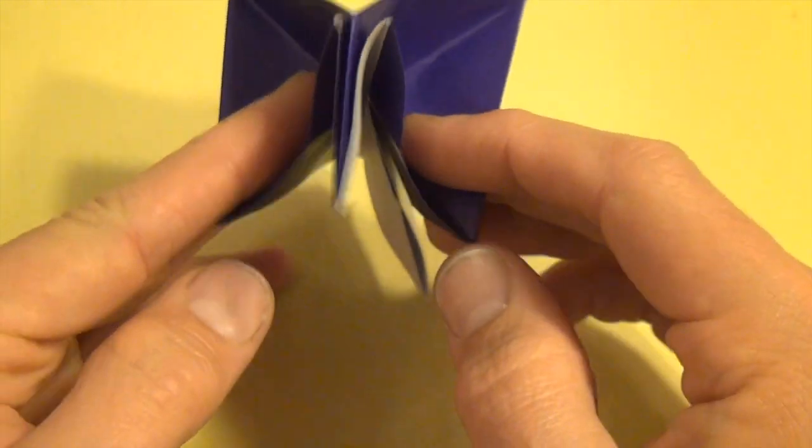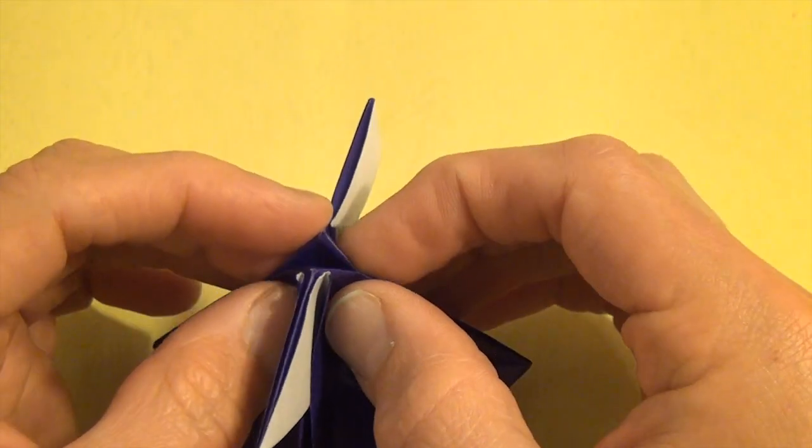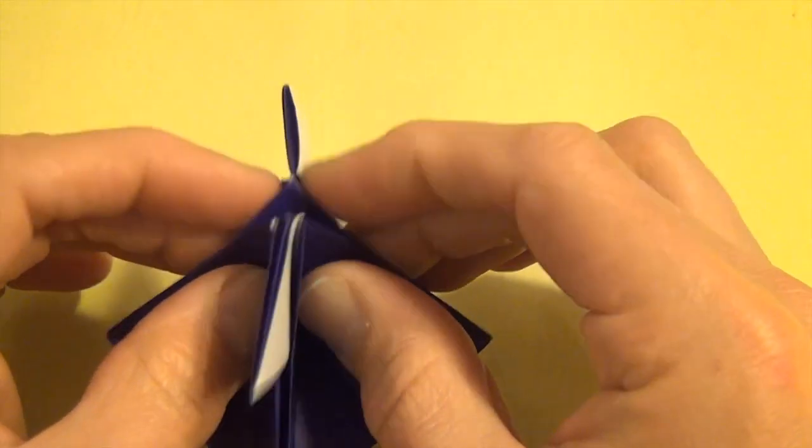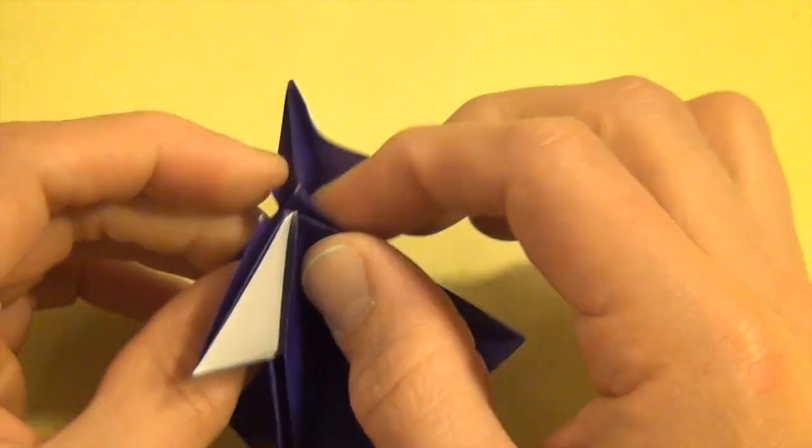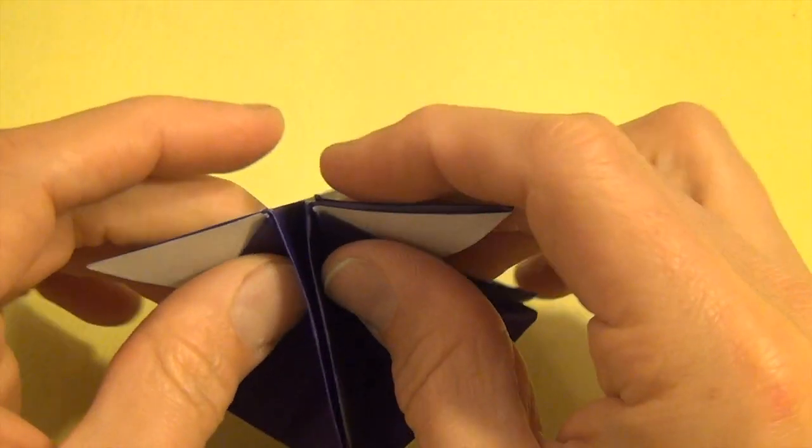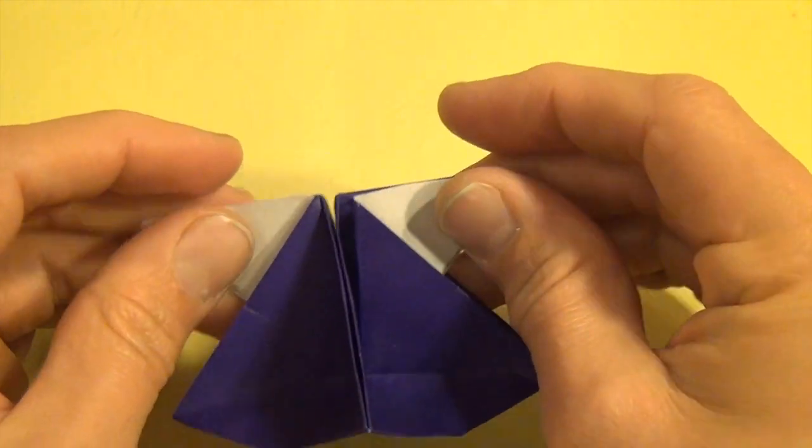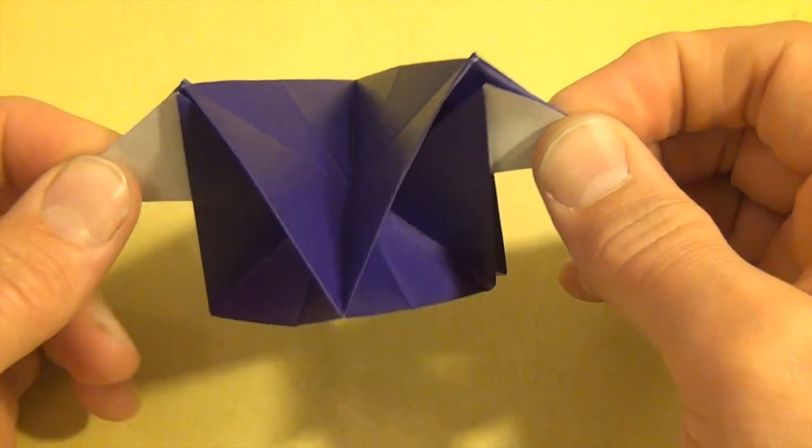So fold it over like this, and up like this, and up like this. Now what you're going to do is hold, when it's up like this, hold these corners just like that, and swing it down.